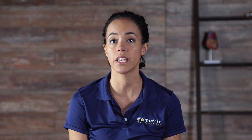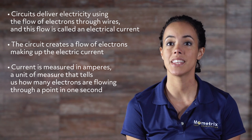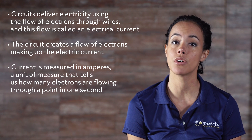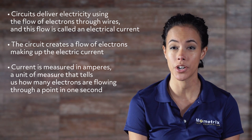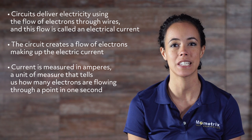Think about the plumbing in a house. The pipes deliver water to places where you use the water, like your sink and shower. Similarly, electric circuits deliver electricity to items and places that can use that electricity, like a light bulb, refrigerator, or TV. Circuits deliver electricity using the flow of electrons through wires, and this flow is called an electrical current. Just like the water pipes create a flow of water molecules making up the water current, the circuit creates a flow of electrons making up the electric current.